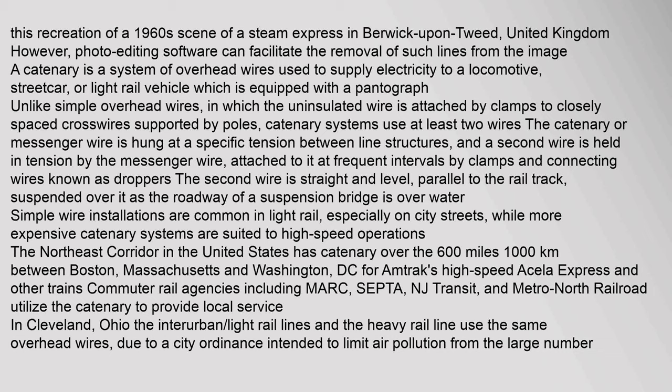A catenary is a system of overhead wires used to supply electricity to a locomotive, streetcar, or light rail vehicle equipped with a pantograph. Unlike simple overhead wires — where the uninsulated wire is attached by clamps to closely spaced cross wires supported by poles — catenary systems use at least two wires. The catenary or messenger wire is hung at a specific tension between line structures, and a second wire is held in tension by the messenger wire, attached at frequent intervals by clamps and droppers. The second wire is straight, level, and parallel to the rail track, suspended over it as the roadway of a suspension bridge is over water.